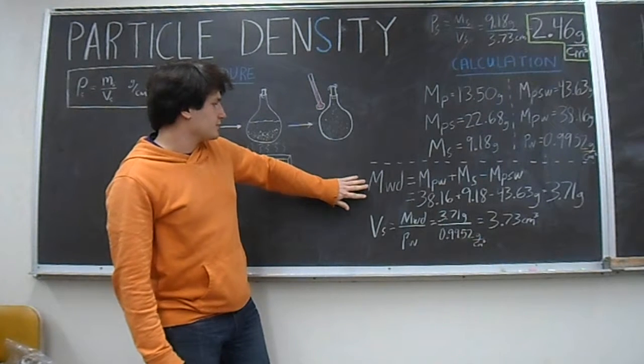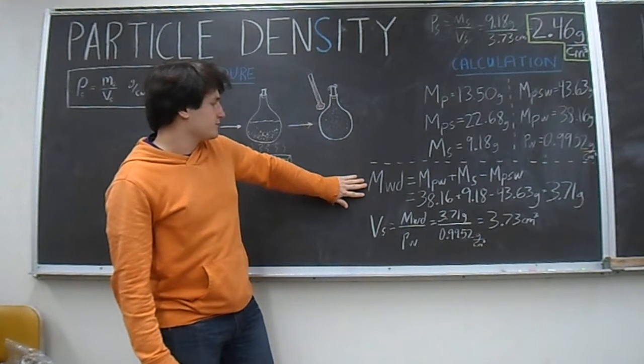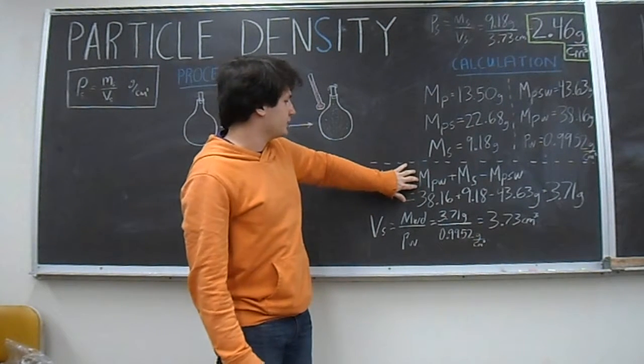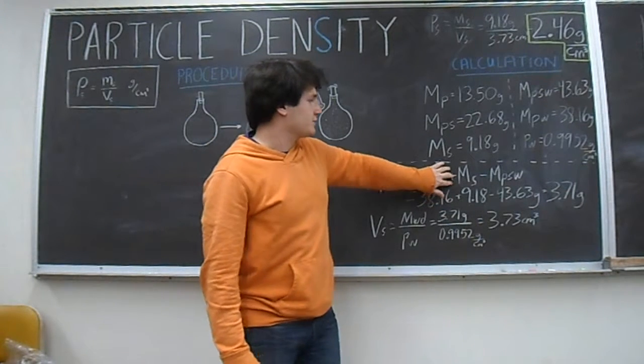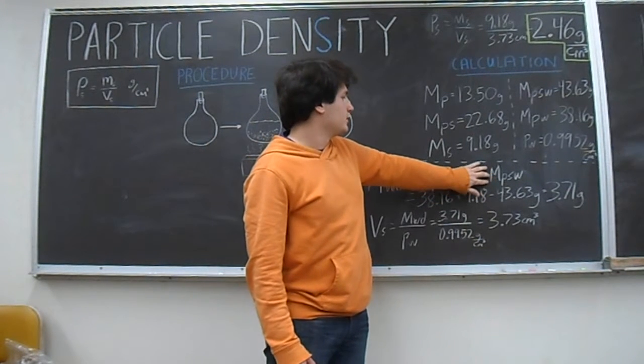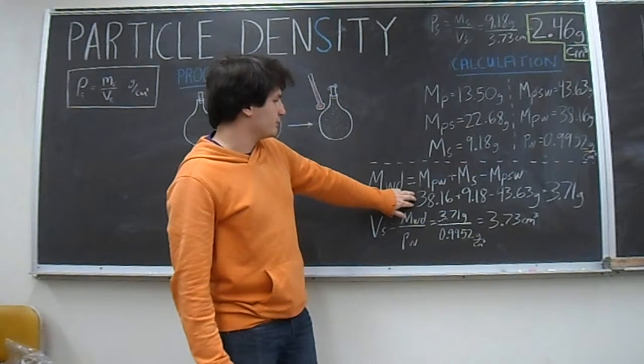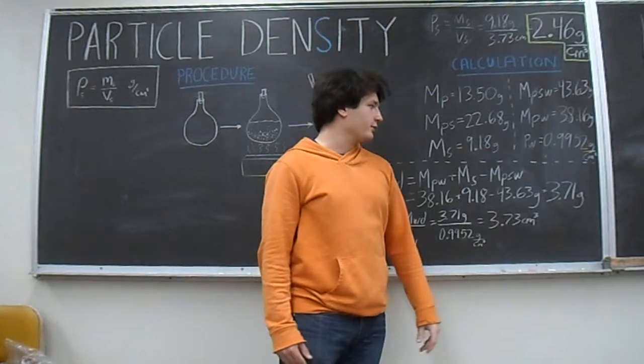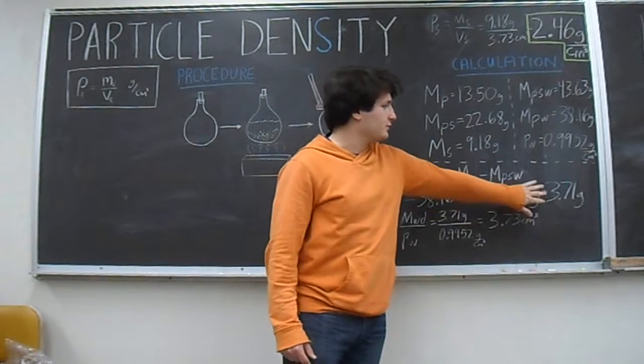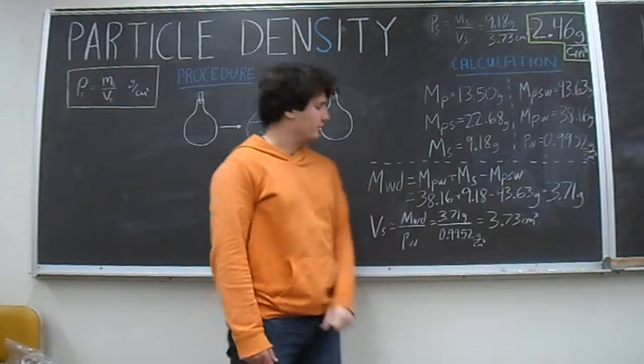Then you come down to calculations, and you find the mass of the water displaced, which is the mass of the pycnometer in water plus the mass of just the solids minus the mass of everything combined. That's 38.16 plus 9.18 minus 43.60 grams, which gives you a total of 3.71 grams.